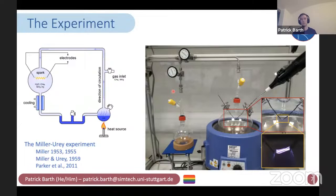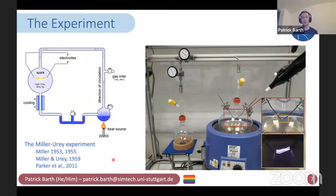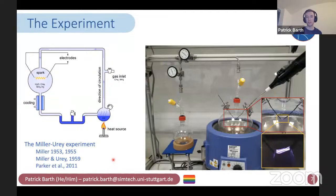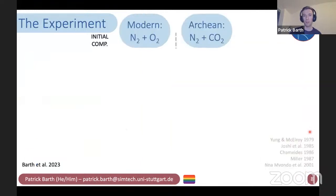To answer those questions, we performed experiments similar to the original Miller-Urey experiment. Back about 70 years ago, Miller and Urey inserted a discharge into a reducing gas mixture of methane, ammonia, and hydrogen, and found that when they let it run for over a week, it produced several amino acids — more than 20 in total. We conducted very similar experiments in our lab in St. Andrews. However, we used a different atmospheric composition, as we now think early Earth's atmosphere was actually not strongly reducing, but rather a mixture of N2 and CO2. So we conducted experiments with N2 and O2, mimicking modern Earth's atmosphere, and N2 and CO2, similar to early Earth's atmosphere.